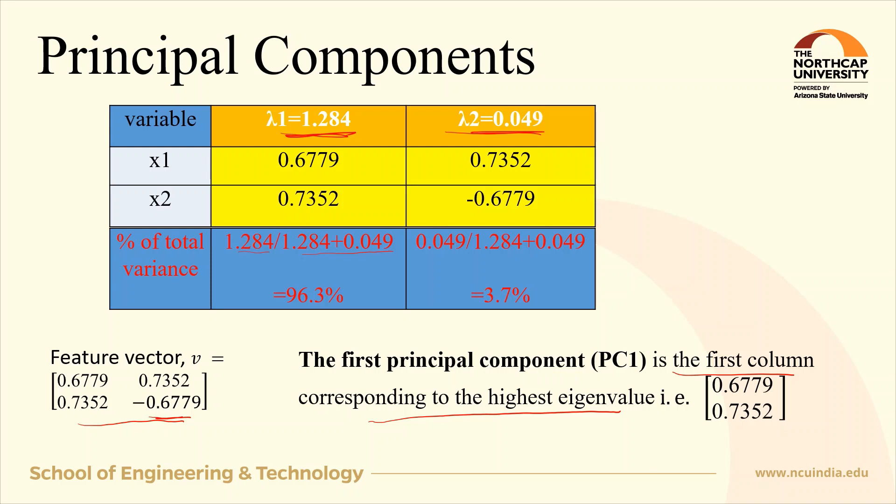Now, at this step, we choose whether to keep all these components or discard those with lesser variance. Here we can ignore the second principal component and retain the first principal component. This way, we reduce the dimension of the data from 2 to 1.